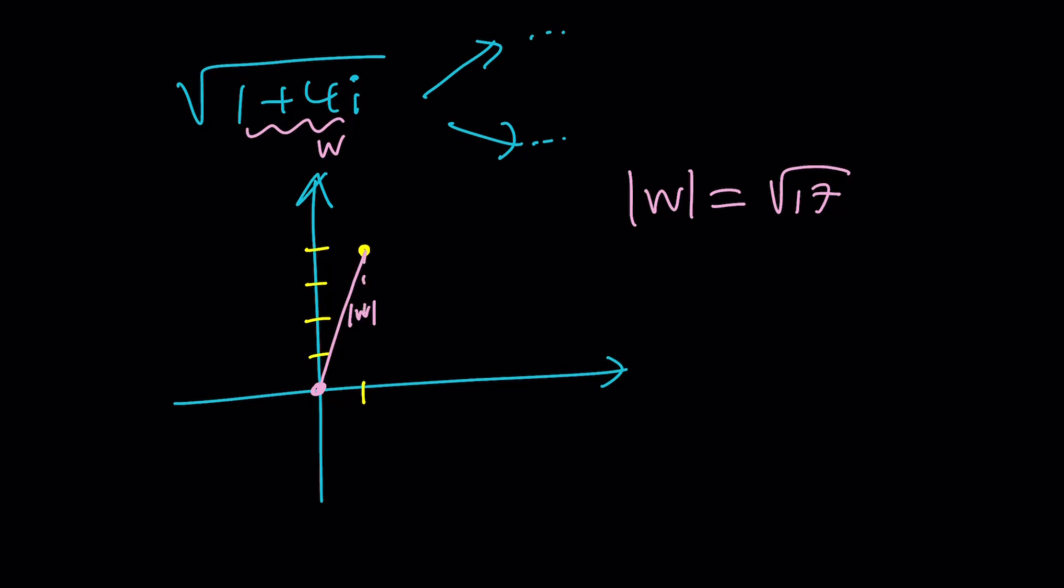And its modulus, if you call this number w, the absolute value of w is going to be square root of 17. And then what about the angle, the theta, right? So you do need two things to be able to write it in polar form because you can write w as absolute value of w times e to the power i times the argument of w.